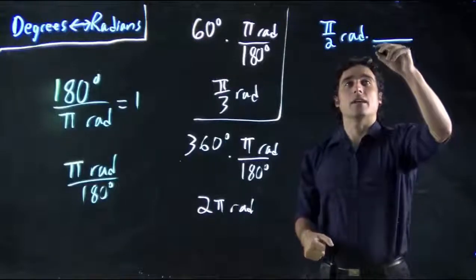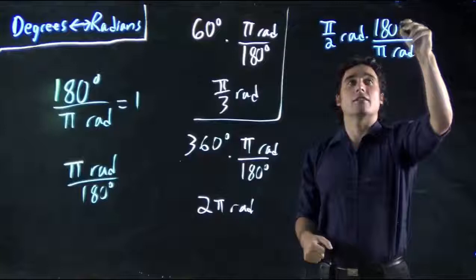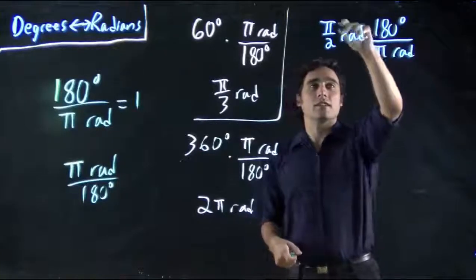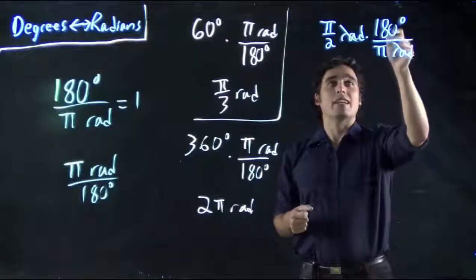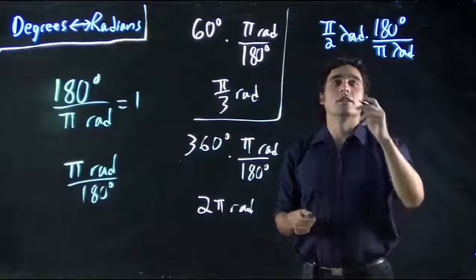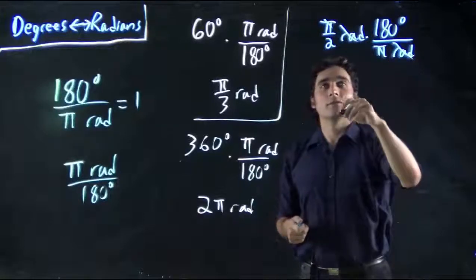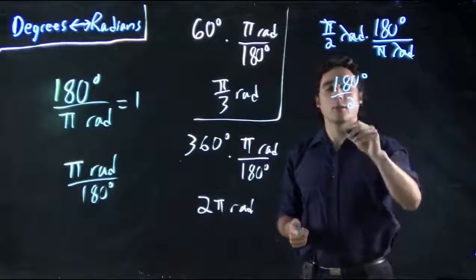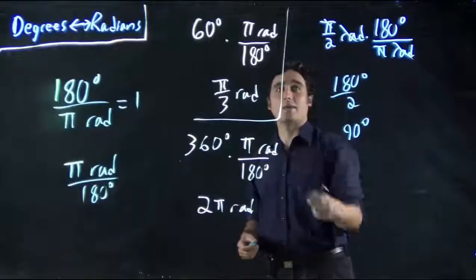So we're multiplying by π radians on the bottom and still have to put the 180 degrees on top. Again, in some cases you won't even see radians written. But in our case it's nice and convenient because we can see they clearly cancel. The π's will also cancel. And then we have 180 over 2. 180 over 2 degrees. Well that's the same as 90 degrees. So we can conclude 90 degrees is the same as π/2 radians.